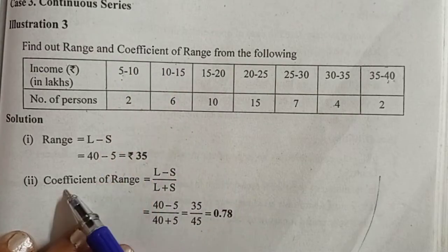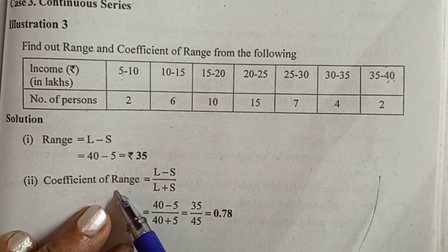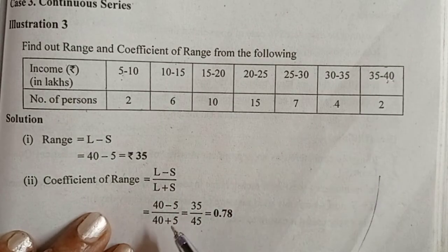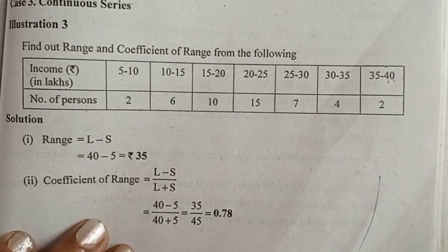Now calculate the coefficient of range. Coefficient of range: 40 minus 5 divided by 40 plus 5. So, the answer is 0.78.